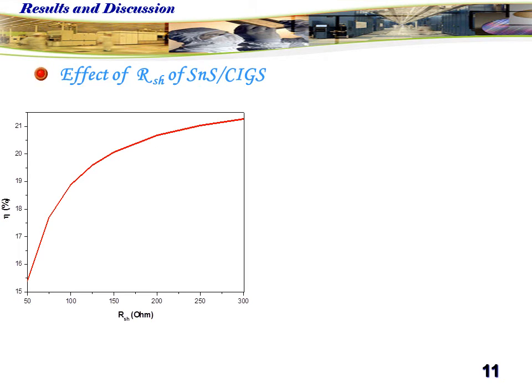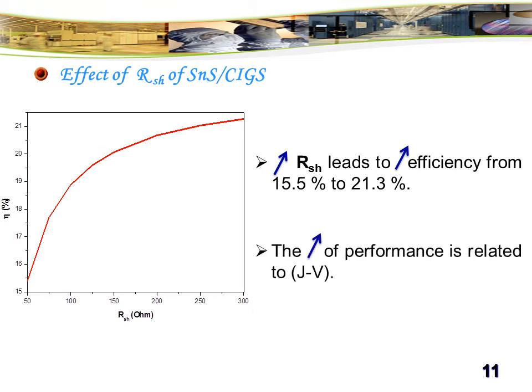The effect of shunt resistance on the structure with tin sulfide buffer layer. We observed that the increase of shunt resistance leads to increase of efficiency from 15.5% to 21.3%. The risk of performance is related to I-V characteristic.